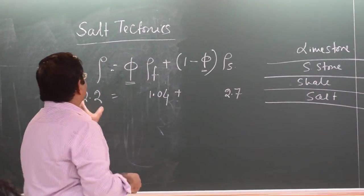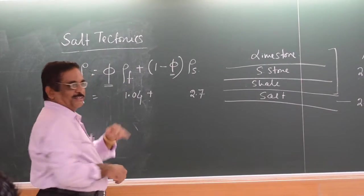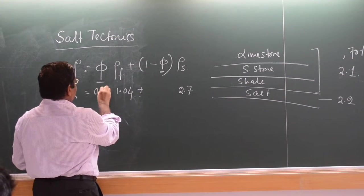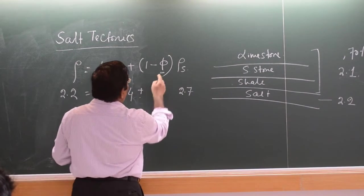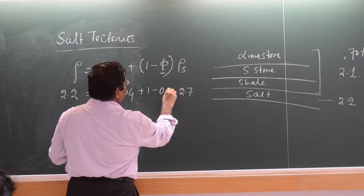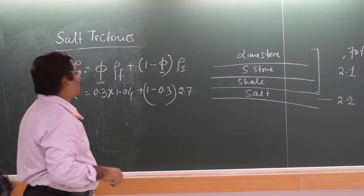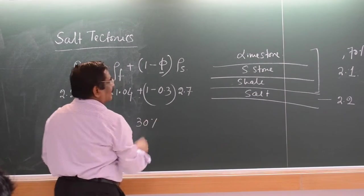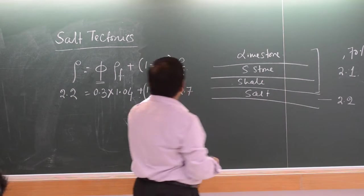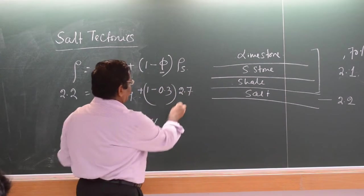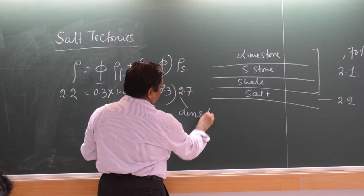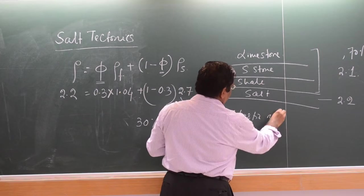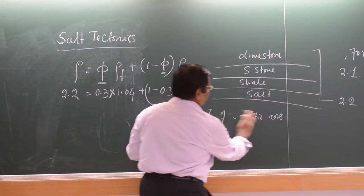The fluid density is 1.04 and this value is 2.7. So, what will be the porosity? The answer is 0.3, isn't it? This will be 1 minus 0.3. So, they will become equal — 2.3. So, if it is 30 percent porosity, then the density of this material will become 2.7 — the density of the clastic rock. Clastic rock means the minerals present in the rock.